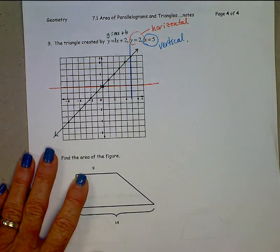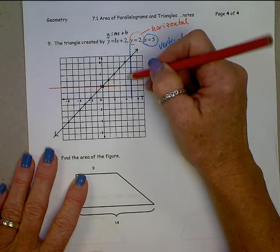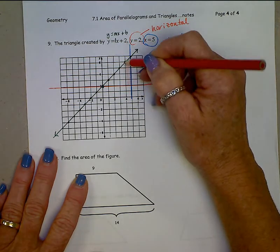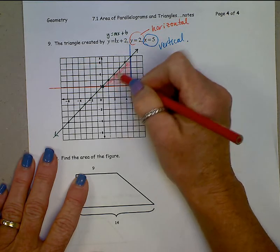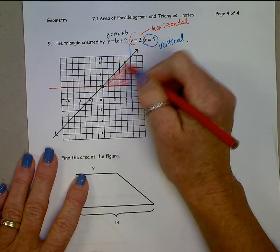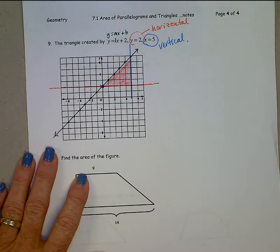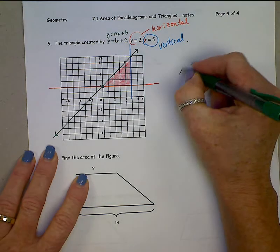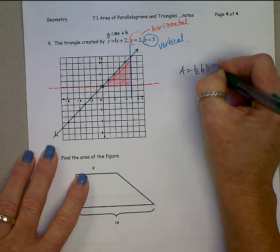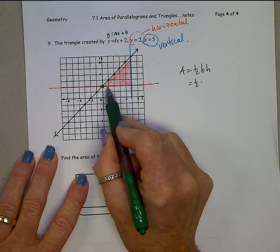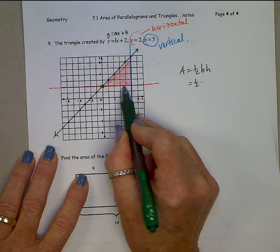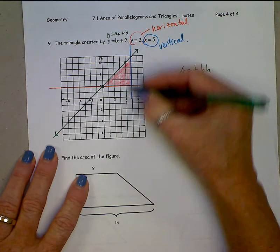We are finding the area of this triangle right here. Area of a triangle is 1 half base times height. The base, we can just go ahead and count here, 2, 3, 4, 5. Height, 1, 2, 3, 4, 5.